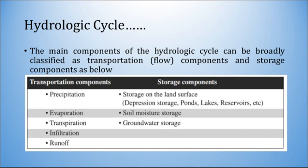The main components of the hydrologic cycle can be broadly classified as transportation (flow components) and storage components. A table illustrates this: transportation components include precipitation, evaporation, transpiration, infiltration and runoff, whereas storage components include storage on the land surface (also known as depression storage — ponds, lakes, reservoirs, etc.), soil moisture storage and groundwater storage.